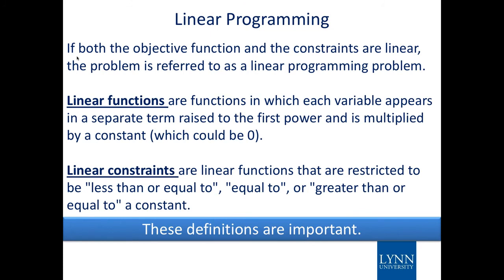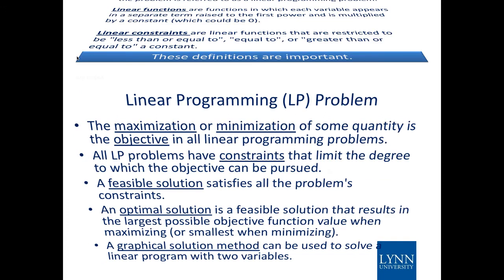The objective and the constraints are linear, so it's referred to as a linear function. Linear functions are those where the variables appear in a separate term raised to the first power, multiplied by a constant — which could be zero. Linear constraints are also linear functions, but they are inequalities, not equations — they have a less than or greater than, and so on.